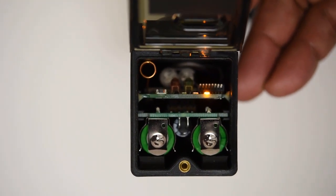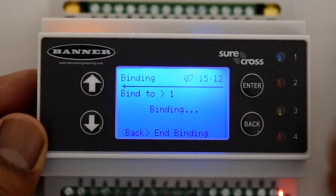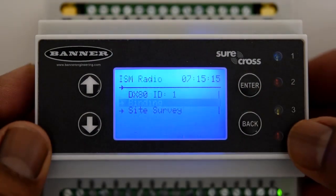So now we want to check the signal strength between the node and the controller. I'm going to go back to the controller, back out of the binding mode, then scroll down the site survey and press enter.